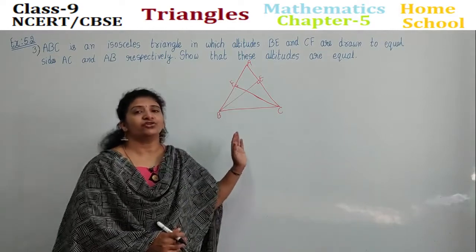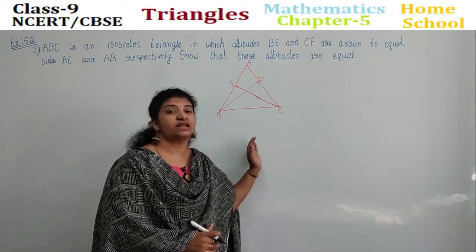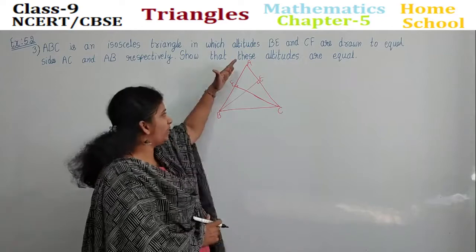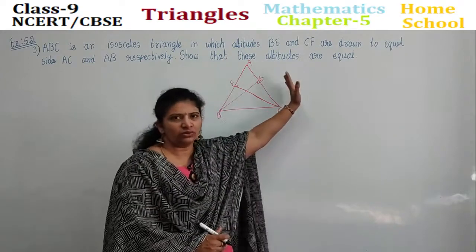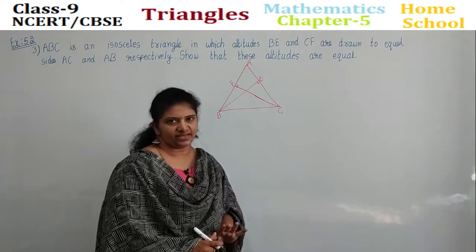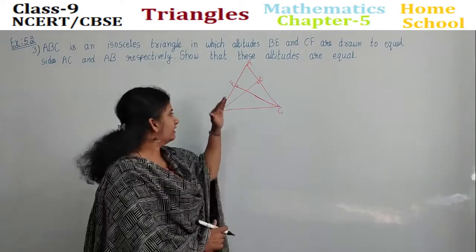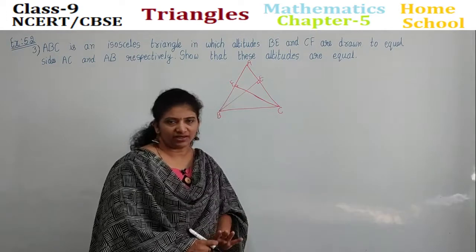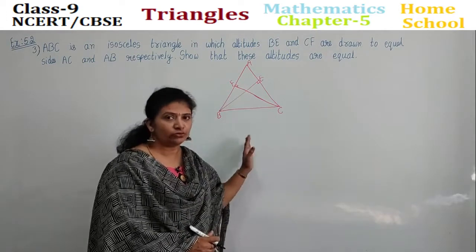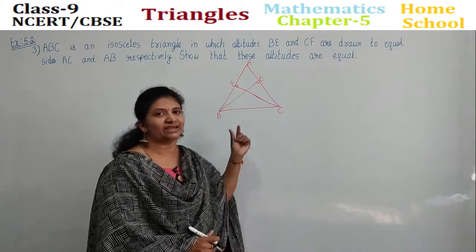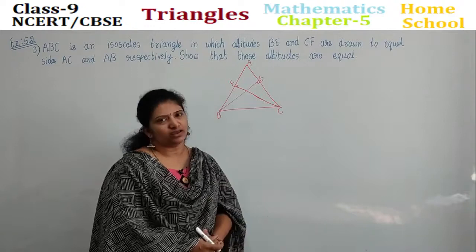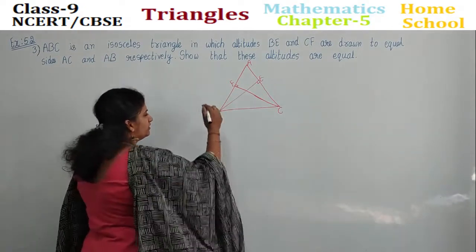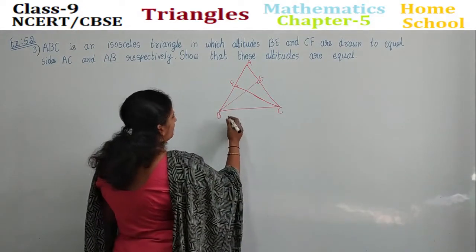We have a triangle ABC which is an isosceles triangle where side AB is equal to AC. Altitudes BE and CF are given in this triangle. You need to prove these altitudes are equal. How can we prove this? Let's have a rough figure.